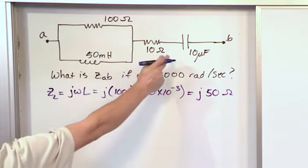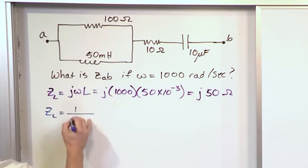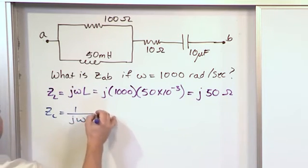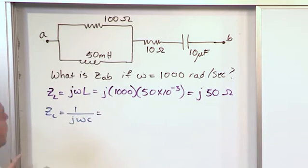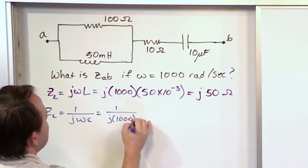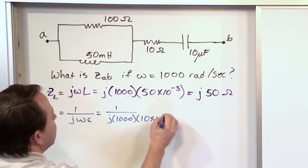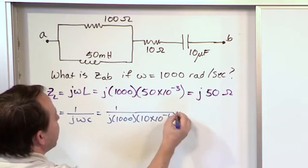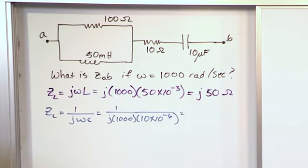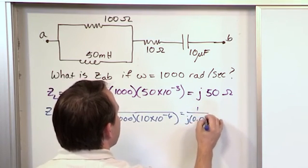Next, we're going to find the impedance of this capacitor over here. So we'll find the impedance of the capacitor 1 over jωC. So we say 1 over j times 1000 times the capacitance 10 microfarads times 10 to the minus 6. We're going to keep it in terms of farads like this. And whenever we multiply these guys together, what we're going to get is 1 over j0.01.